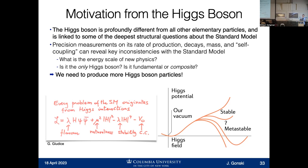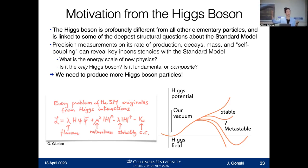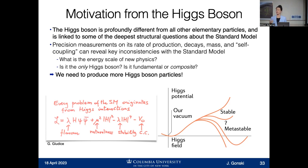In order to study all these properties of the Higgs and answer these fundamental questions, we need more Higgs particles. We need to produce more of them in collisions, study the detector signatures of what happens after they're produced, and then we have more statistical power to answer these questions — better data analysis if we have more of them available.